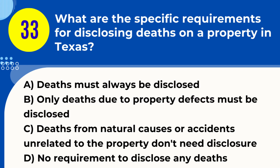Question 33. What are the specific requirements for disclosing deaths on a property in Texas? A. Deaths must always be disclosed. B. Only deaths due to property defects must be disclosed. C. Deaths from natural causes or accidents unrelated to the property don't need disclosure. D. No requirement to disclose any deaths. Answer: C. Deaths from natural causes or accidents unrelated to the property don't need disclosure. Explanation: In Texas, there's no requirement to disclose deaths that occurred on the property from natural causes, accidents unrelated to the condition of the property, or suicides.